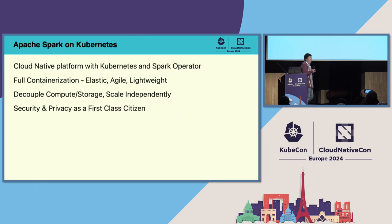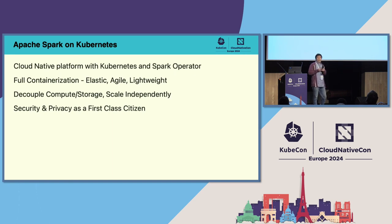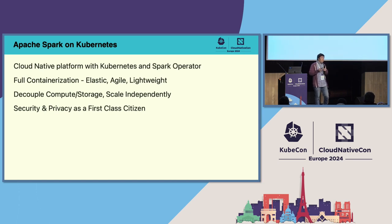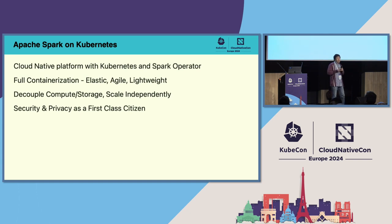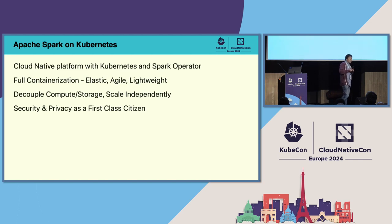As you know, Apache Spark is an open-source distributed computation engine. In just a few lines of code — in Python, Scala, or SQL — data scientists and engineers can easily define a Spark application to process a huge amount of data, and Spark will take care of parallelizing the work with the help of a cluster of machines. However, Spark itself cannot manage these machines directly. It relies on third-party cluster managers such as Hadoop YARN, Apache Mesos, or Kubernetes.